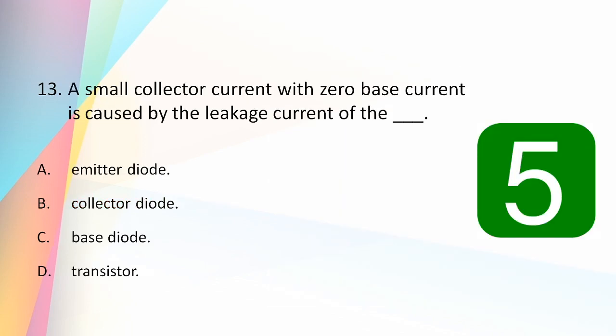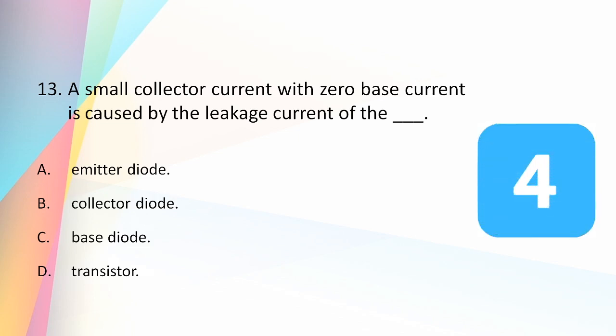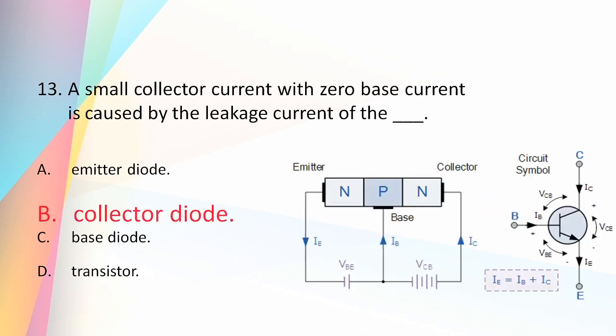A small collector current with zero base current is caused by leakage current of: the emitter diode, collector diode, base diode, or transistor? The answer is collector diode, and this mainly happens in the cutoff condition when the base current is zero. The emitter depletion region is much narrower than the collector depletion region due to forward bias and higher doping levels, so a small leakage current flows through the collector diode, generating a small collector current.